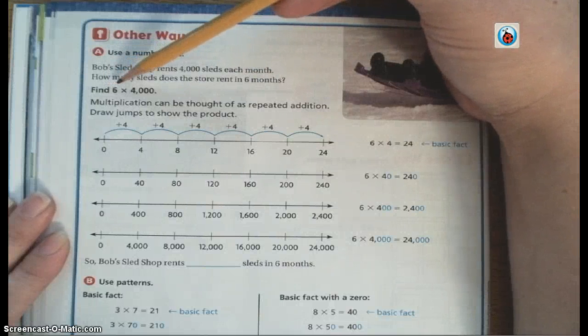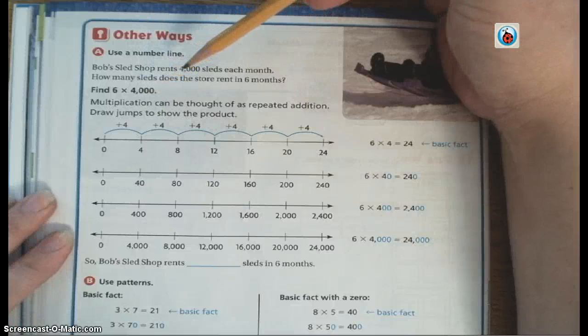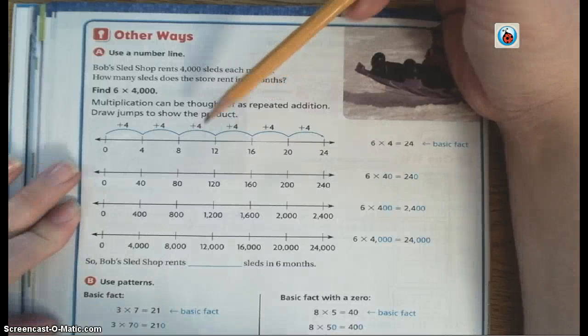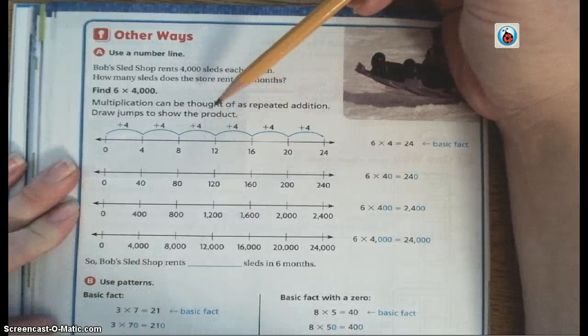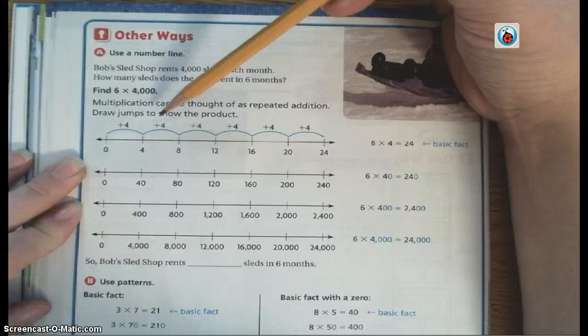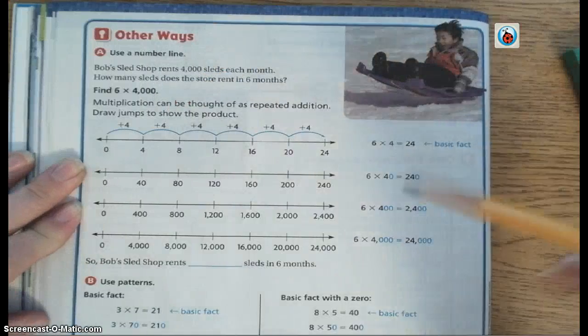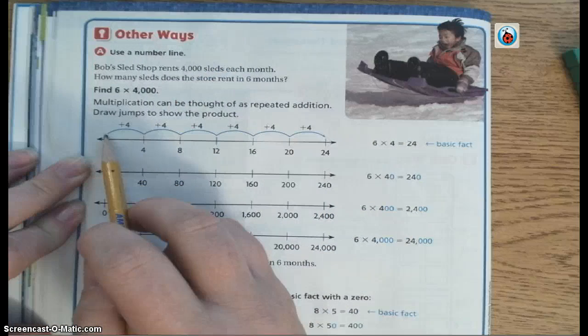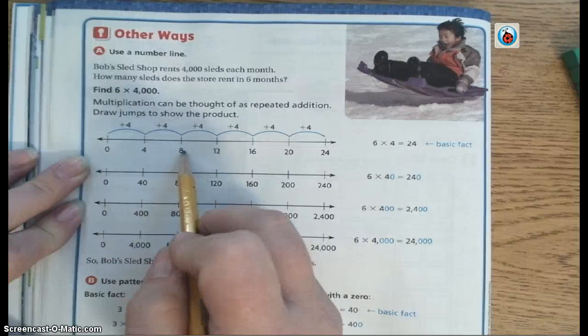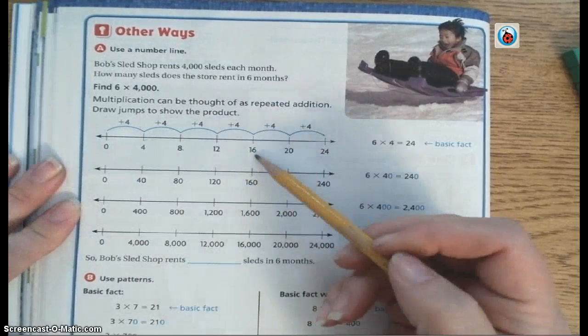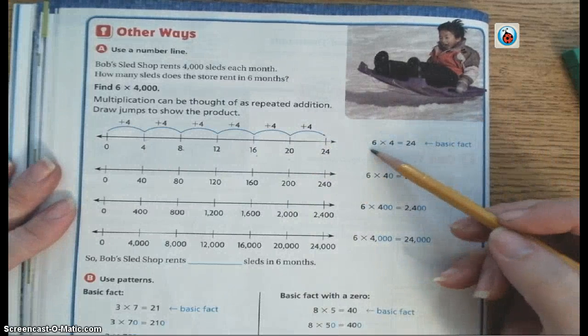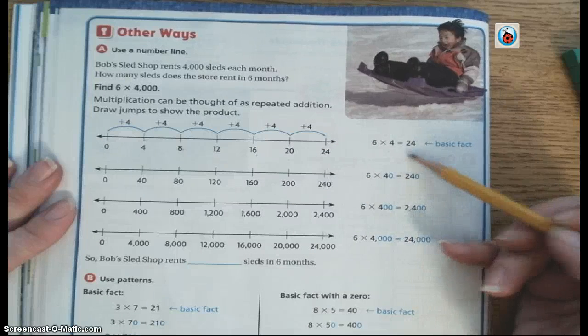And I'm going to be adding those together, or I could take them and multiply them since they're equal. So my problem is finding six groups of 4,000. Multiplication can be thought of as repeated addition. So on the number lines below, I'm going to show how I would add six times to find what six groups of a number would be. On this number line, I'm just going by, I'm adding 4 each time. So it would be 0 plus 4 is 4, 4 plus 4 is 8, 8 plus 4 is 12, 12 plus 4 is 16, 16 plus 4 is 20, 20 plus 4 is 24. So my basic fact is that 6 times 4 is 24. That's a fact that most of us know.